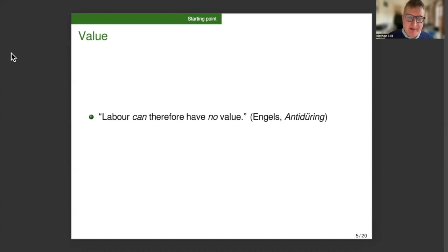A consequence of the definition of value as socially necessary abstract labor time is that labor, in Engel's words, can therefore have no value. Labor is the substance and therefore also the measure of value. So it doesn't make any sense to talk about the value of labor. Similarly, at the other end, money has no price. In the same way that labor can have no value because labor is value, money can have no price because price is just a certain quantity of money.